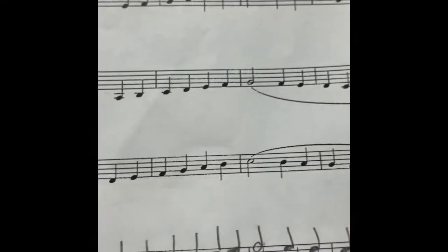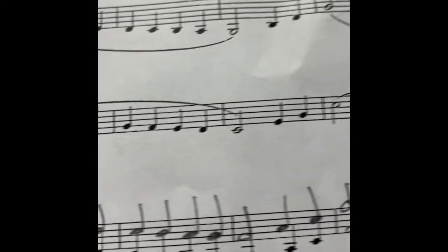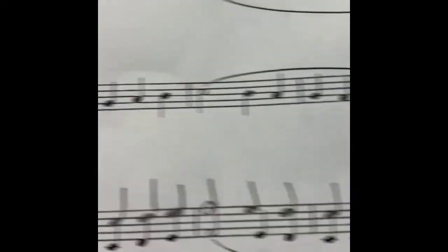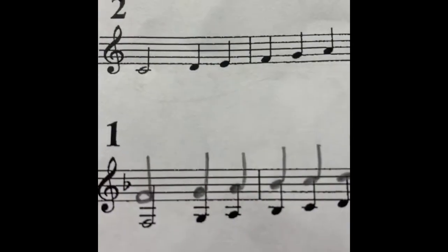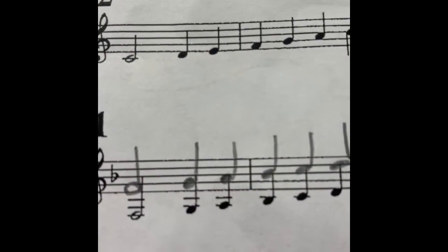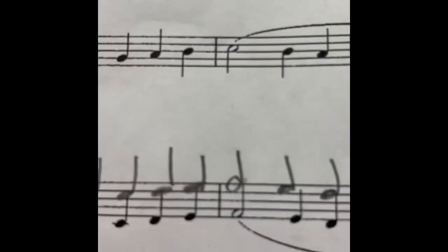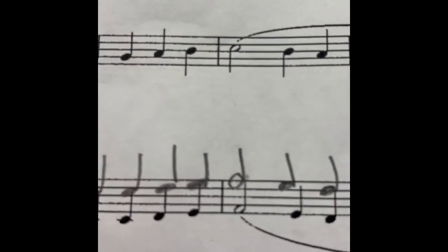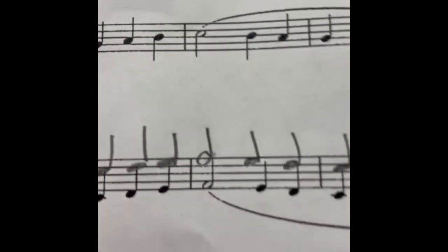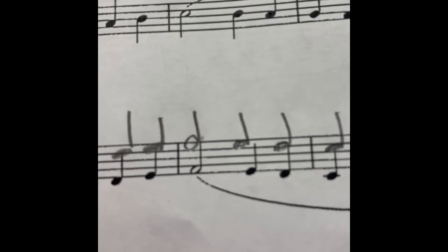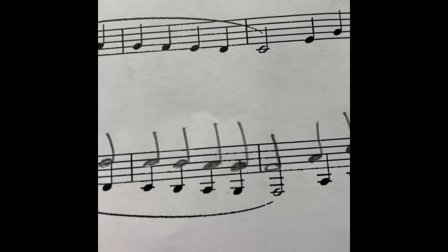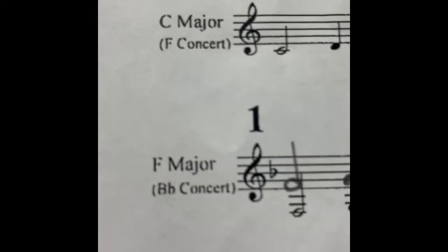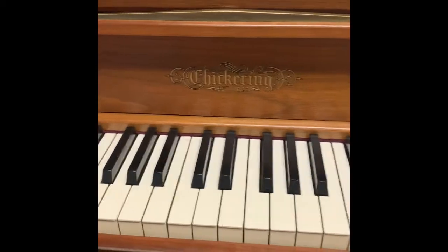This scale looks familiar — it kind of looks just like exercise 96. So you have open C, then D, open E, F, G, A. Now be careful: I said all natural for the key signature, so that B right there should be trigger two. Okay, trigger two for the B natural, and then the high C open. Let's just try that scale.